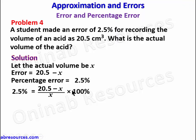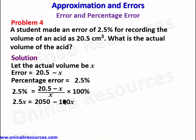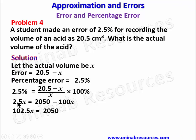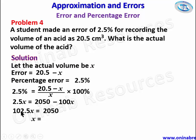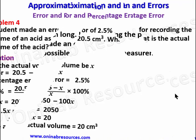Cross-multiplying gives 2.5x equals 2050 minus 100x. Bringing the x terms together: 102.5x equals 2050. Therefore x equals 2050 divided by 102.5, which gives 20. So the actual volume of the acid is 20 cubic centimeters. That is all for problem four.